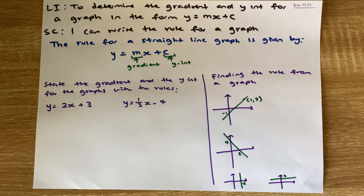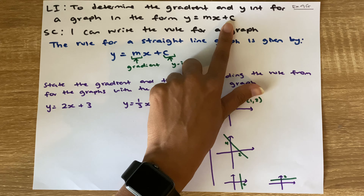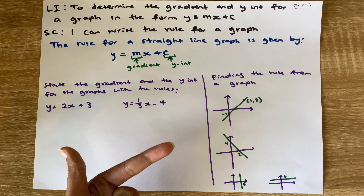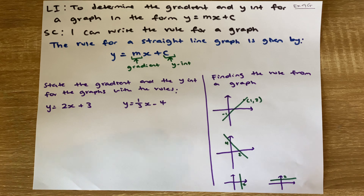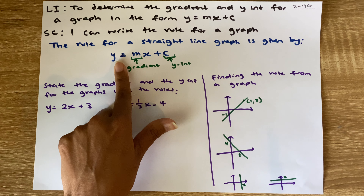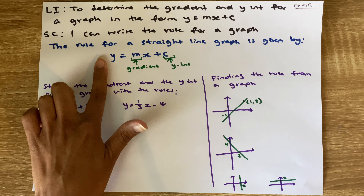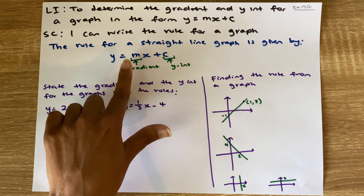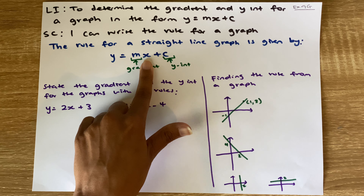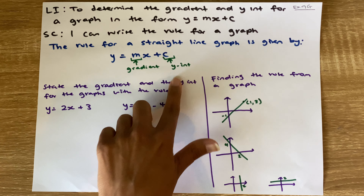Hello everybody. Today we are looking at how to determine the gradient and the y-intercept for a graph in the form of our rule. So if we're given a rule or a graph, we want to be able to identify the gradient, the y-intercept, or write the rule straight from a graph. We know that the rule for a straight line graph is given by y equals mx plus c. So we have our y-axis equals our gradient multiplied by our x-axis coordinate plus a number — and that number is going to be our y-intercept.